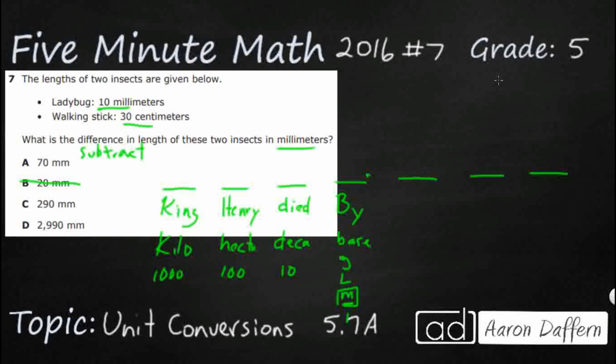And then when we get a little bit smaller, these are the ones we're more used to. King Henry died by drinking - we've got chocolate milk. So this is your deci, and this is like your tenths, so 0.1. This is your centi - we know centimeters. This is like 100. And this is your millimeters, milliliters, milligrams, whatever it is. This is your thousandths place.